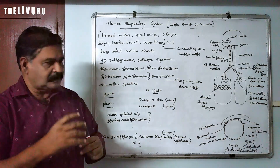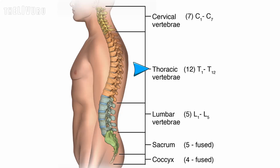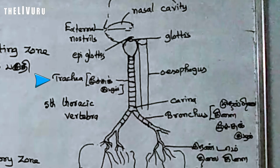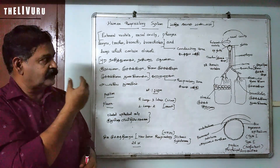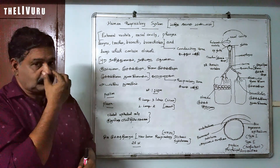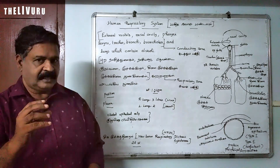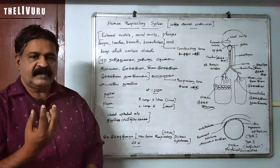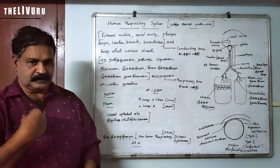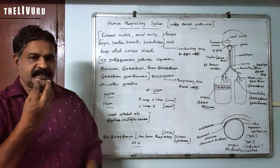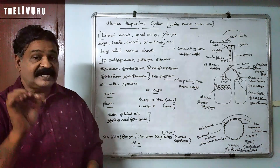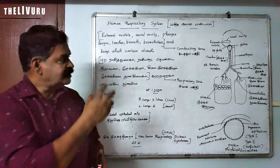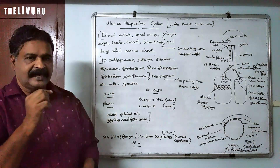The trachea reaches the 5th thoracic vertebra. If you look at the external nostrils, you can see the hairs on the bottom. That is why we can filter the air we inhale. During inspiration, we are inhaling the air to filter the pathogens and the dust.